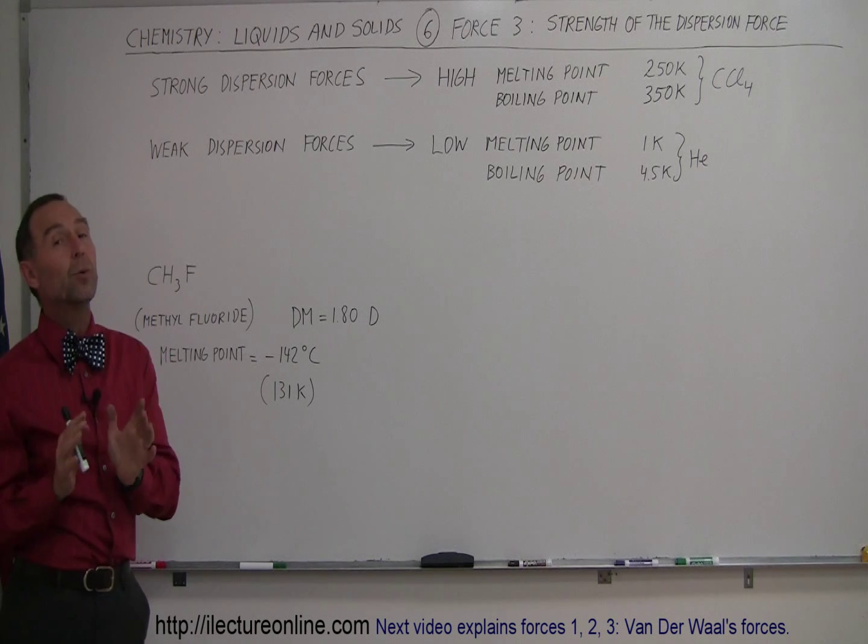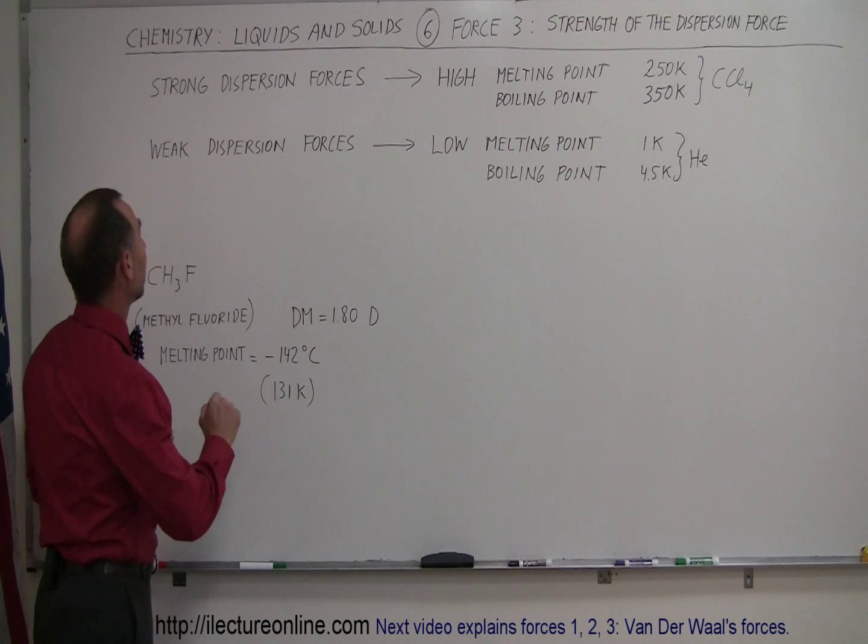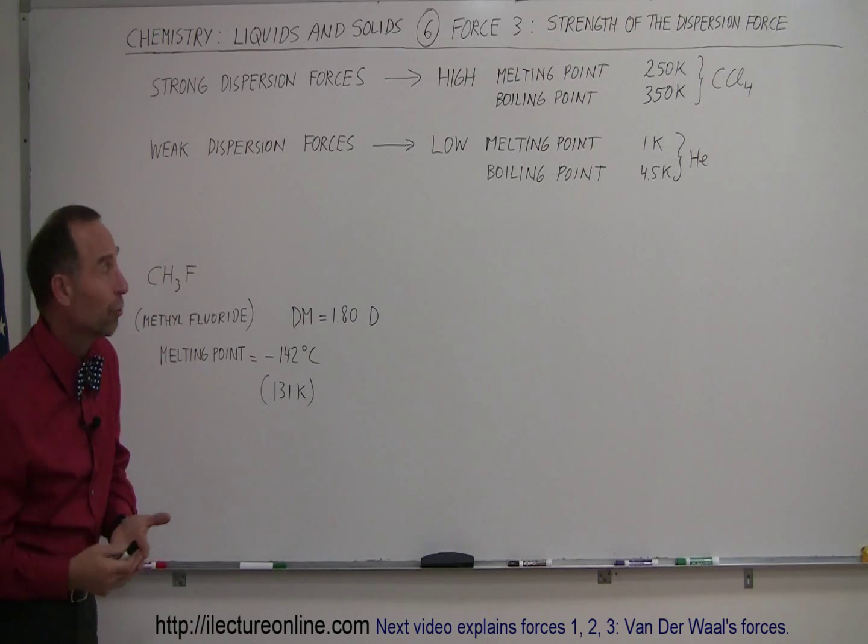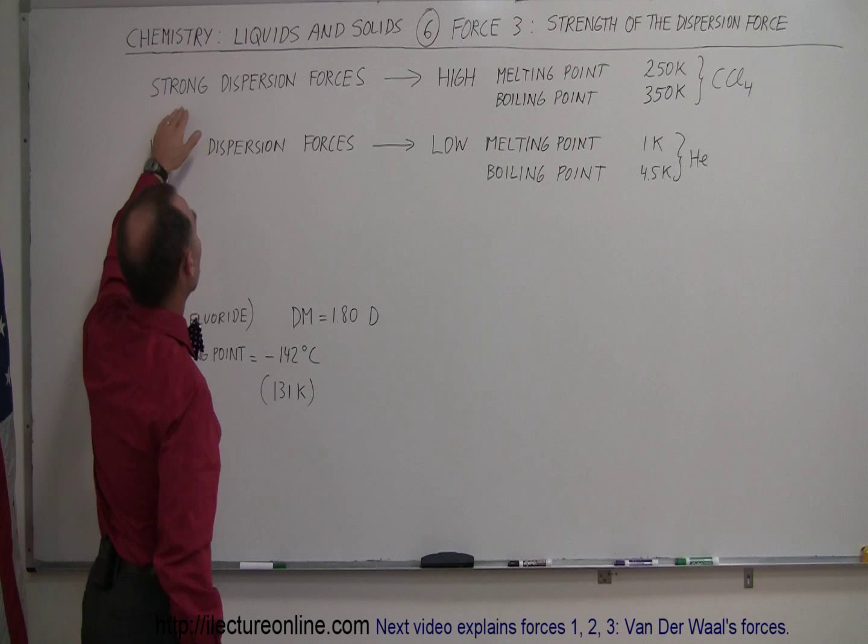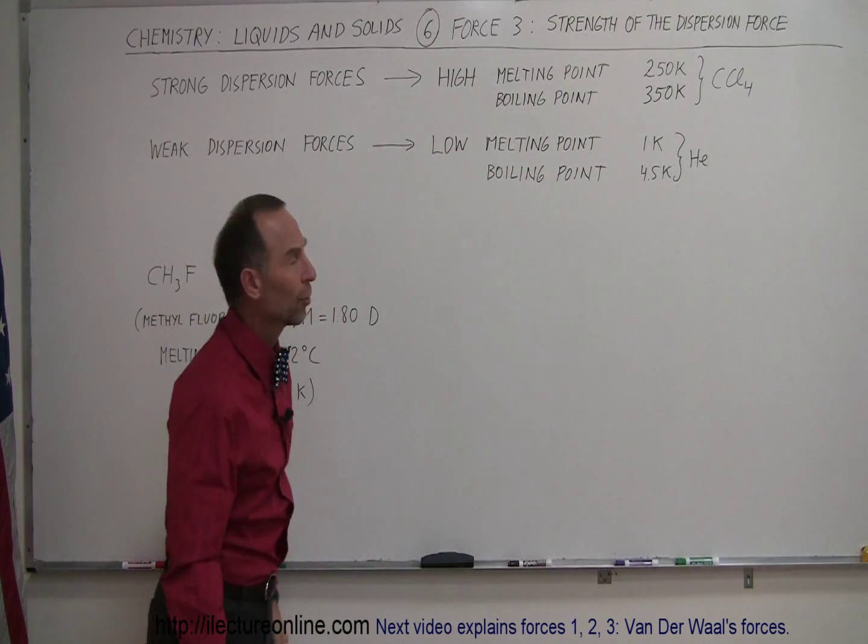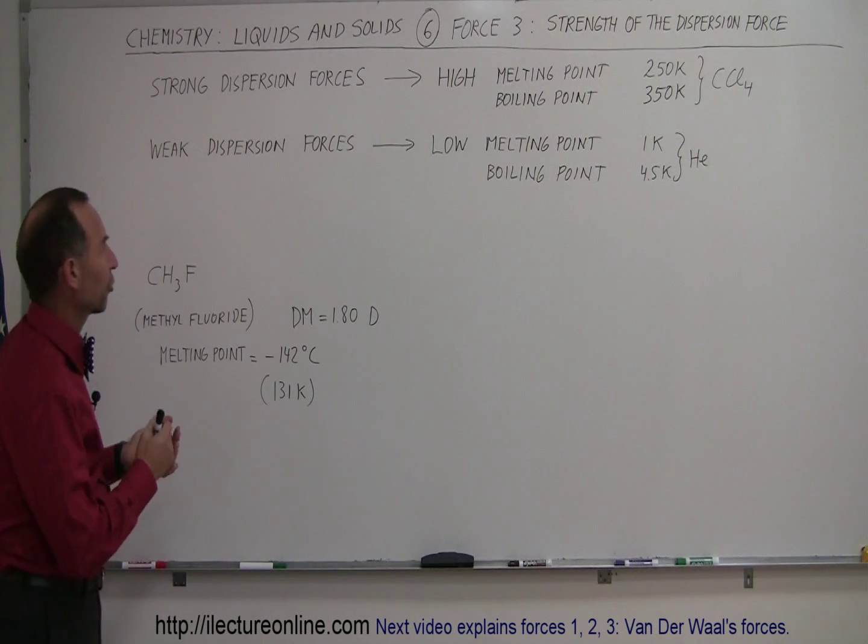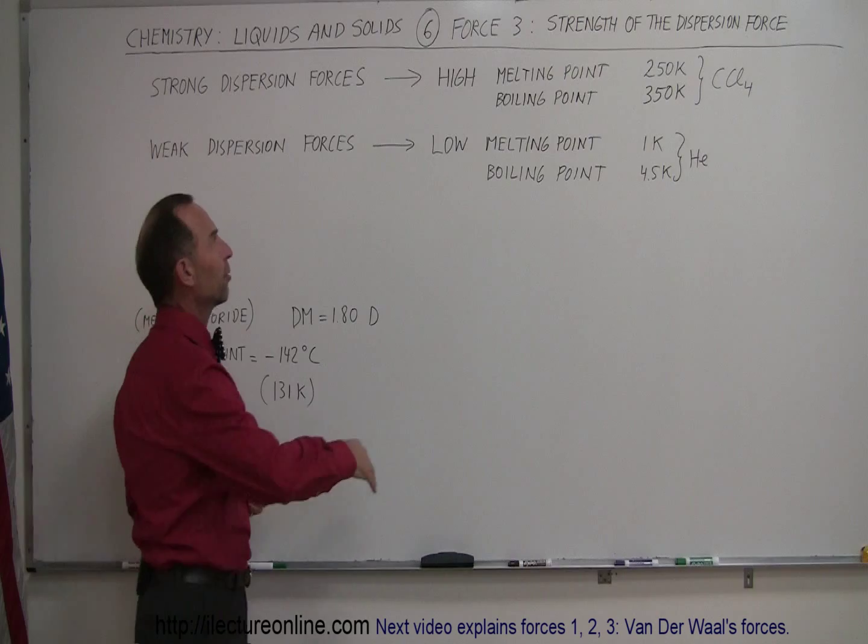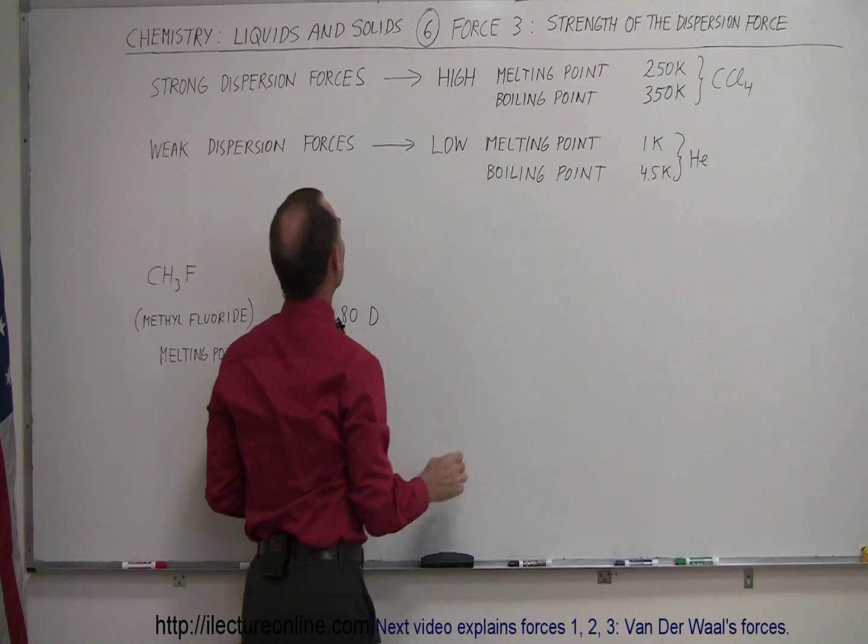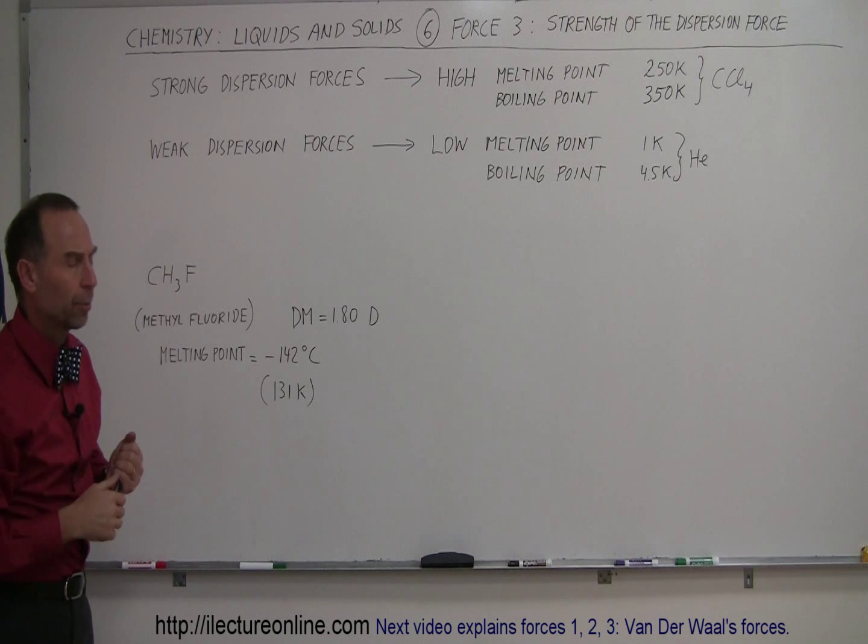Normally they're really weak. But how do we figure out how strong the dispersion forces are? We can do so by looking at the melting and boiling points of the atoms or molecules. If there are strong dispersion forces, we expect high melting and boiling points. If there are weak dispersion forces, we expect low melting and boiling points.